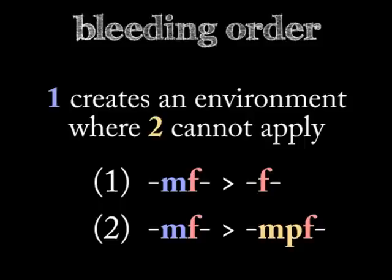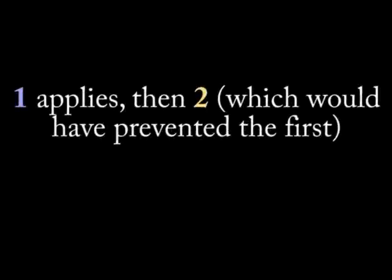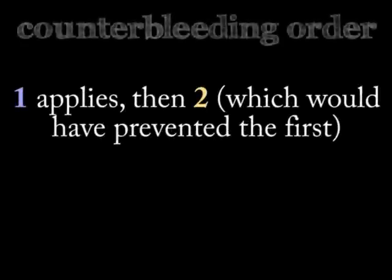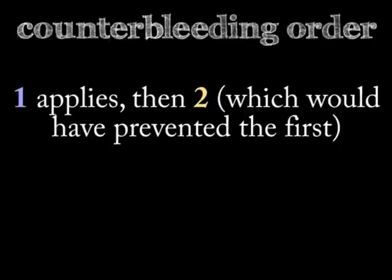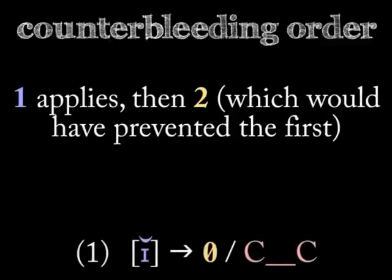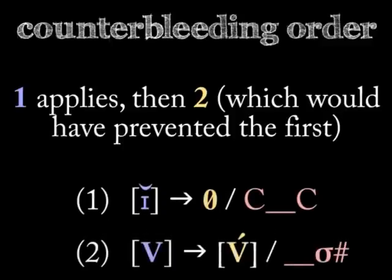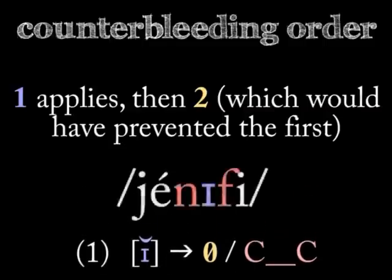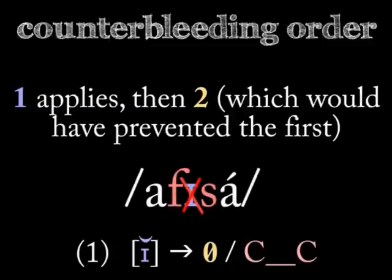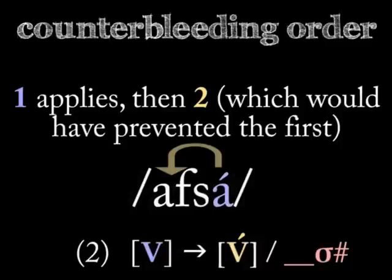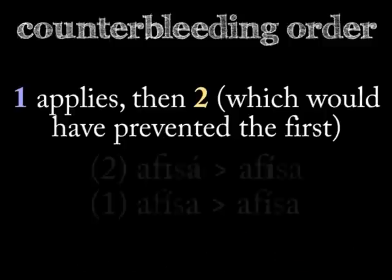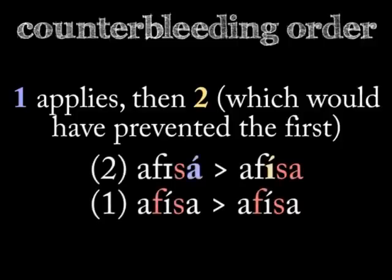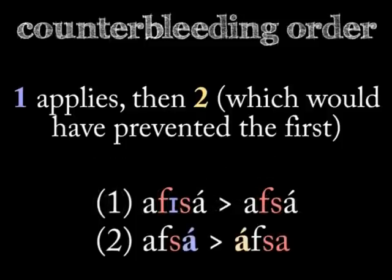When the bleeding rules are reversed — the earlier rule operates, followed by the later rule which would have prevented it from applying — the result is a counter-bleeding order, and both rules apply. For instance, the rule that deletes an unstressed I in the middle of a word helped turn YENIFI into YEMFI, but also caused AFISA to change to AFSA. A new accent shift moves the stress to the first syllable, resulting in AFSA. Had the accent shifted first to AFSA, it would have prevented the deletion of the unstressed I — but since it happened second, the two rules apply in a counter-bleeding direction.